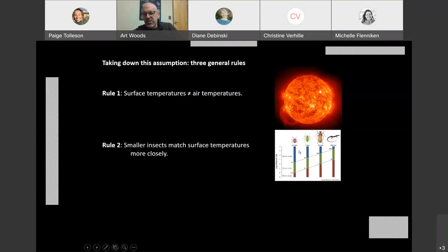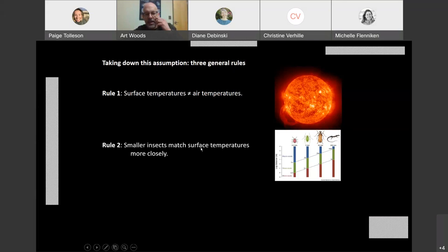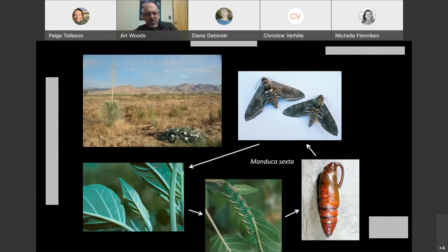Rule number two is a slightly more nuanced argument about the coupling between insect temperatures and the surface temperatures. The assertion is that smaller insects match the surface temperatures more closely. Up until about six or eight years ago, I worked quite a bit on this species of hawk moth in southeastern Arizona. A series of pictures shows the life cycle. The females fly around, they find their favorite host plant, which is Datura wrightii. They lay eggs on those leaves. The eggs hatch out into little caterpillars, which very rapidly grow into large caterpillars that then crawl underground and make a pupa.